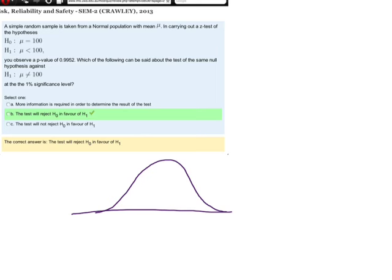So we were doing a test to see whether or not μ was less than 100. Let's say that μ = 100 is down here. What we found is that the p-value for finding a more extreme value than that was 0.9952.